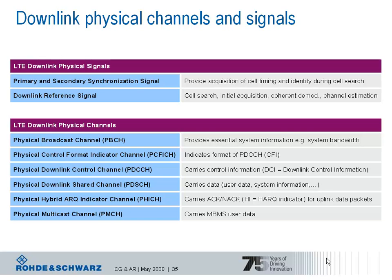These channels include, for example, the physical broadcast channel carrying essential system information. Further, several control channels such as the physical control format indicator channel and the physical downlink control channel are required to inform the UE about scheduling decisions. The physical downlink shared channel is used to transport data — any kind of data — including the obvious transport of user data to the device, but also system information or paging information.